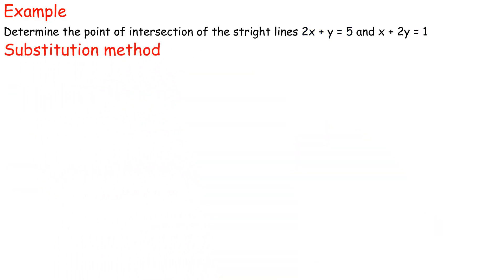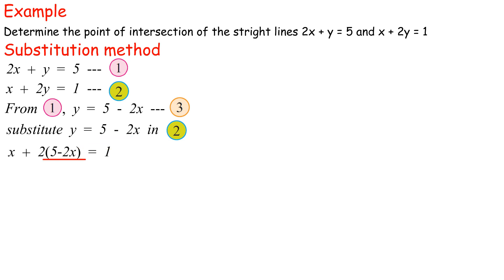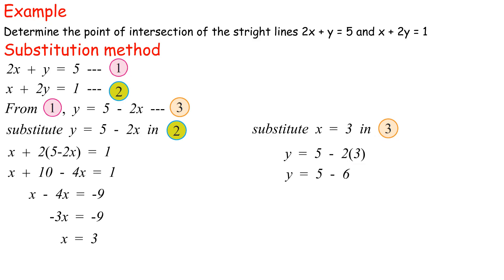Substitution method: Let equation 1 be 2x plus y equals 5 and equation 2 be x plus 2y equals 1. From equation 1, y equals 5 minus 2x (equation 3). Substituting into equation 2: x plus 2(5 minus 2x) equals 1, so x plus 10 minus 4x equals 1, giving negative 3x equals negative 9, thus x equals 3. Substituting x equals 3 into equation 3: y equals 5 minus 6 equals negative 1. Point of intersection is (3, negative 1).